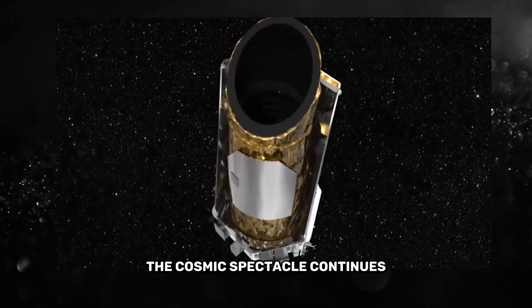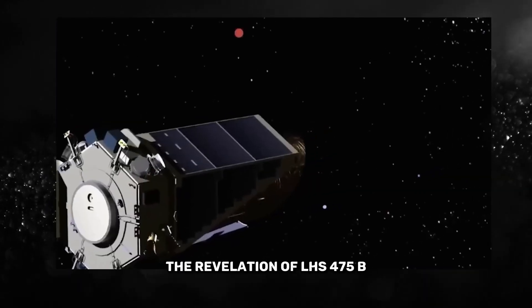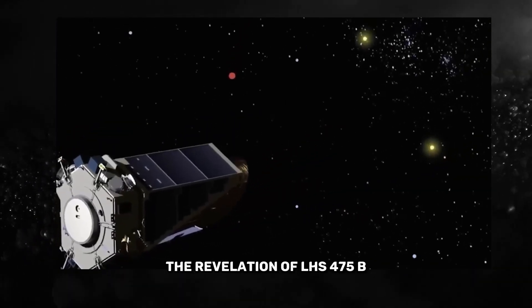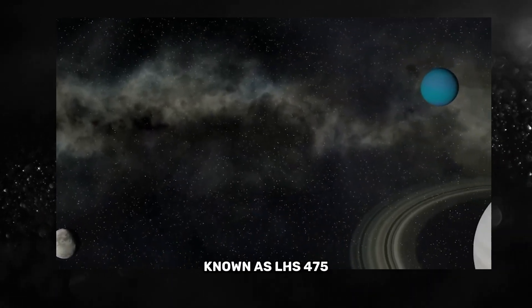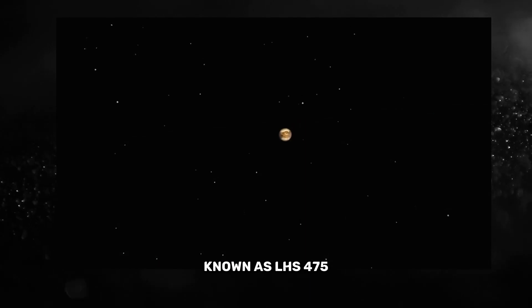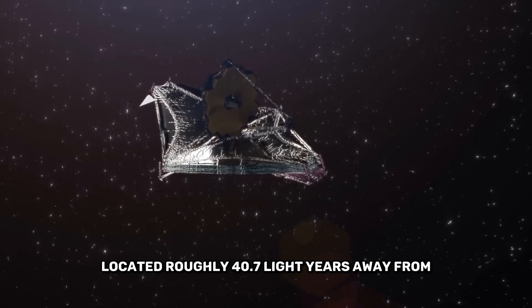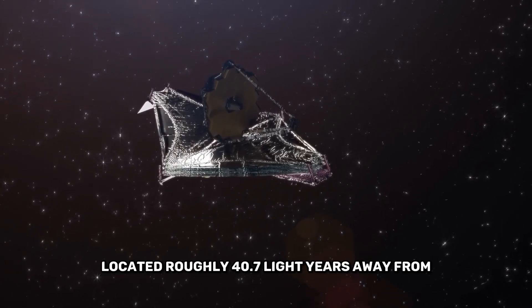The cosmic spectacle continues as we explore the revelation of LHS-475b. This rocky exoplanet orbits a star known as LHS-475, located roughly 40.7 light years away from our solar system.